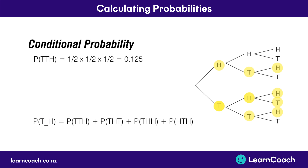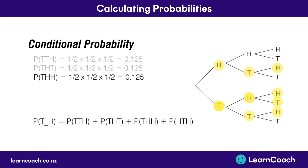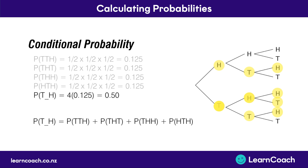So you can see here, a tail-tail-head has a probability of 0.125, which is the same as a tail-head-tail, a tail-head-head, and a head-tail-head. If we add all of these probabilities together, we can say the probability of getting a head given you've already got a tail is 0.5.